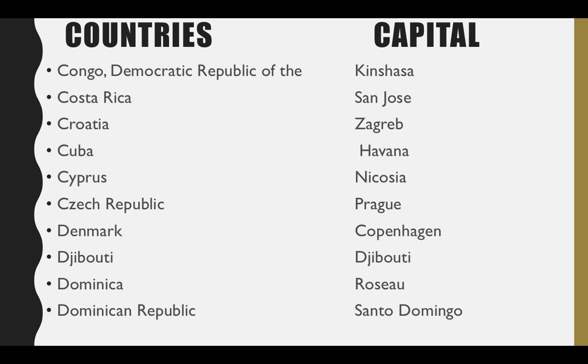We have already discussed Congo in part 1. So next is Congo — that is the Democratic Republic of Congo. We have two countries as Congo: DR Congo and Congo. Congo we had already discussed. Now it is Democratic Republic or DR Congo, and its capital is Kinshasa.